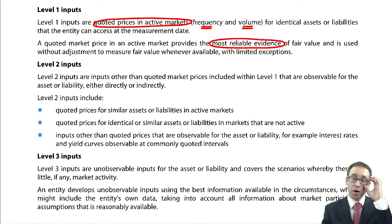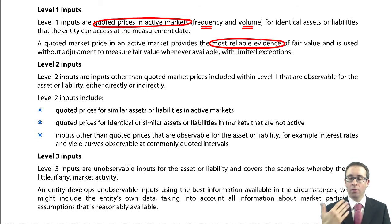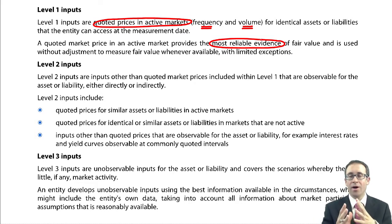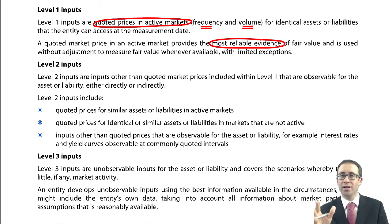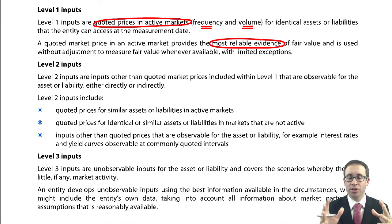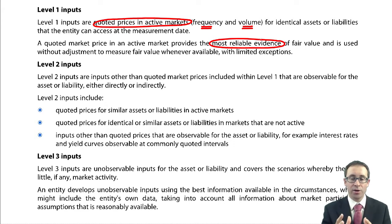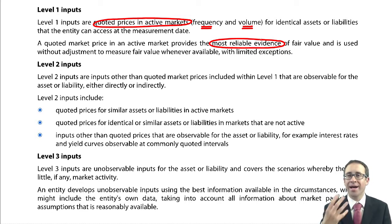We then drop down a level from quoted prices in an active market and talk about Level 2 observable inputs. It could be that we don't have an identical asset or liability — maybe we have a share, but that share isn't traded, but there's an identical-style share for a similar asset in an active market that we could use. So it mentions quoted prices for similar assets or liabilities in active markets. It's not identical, but it is similar.